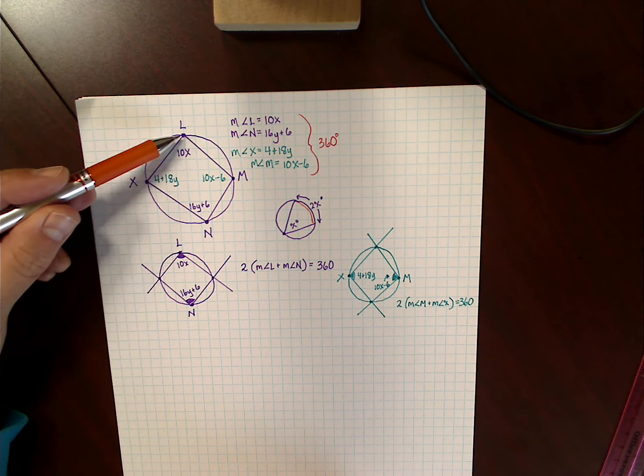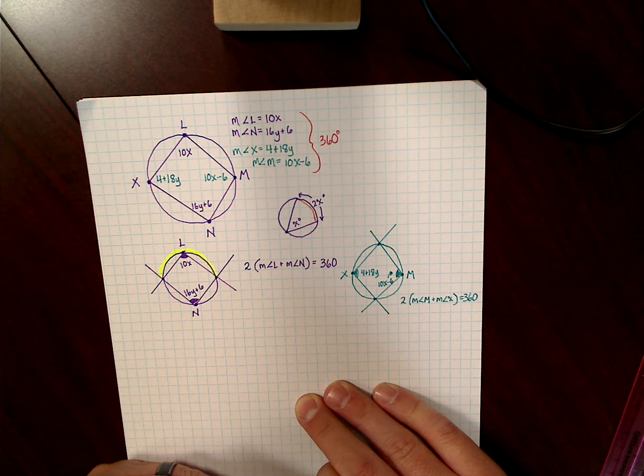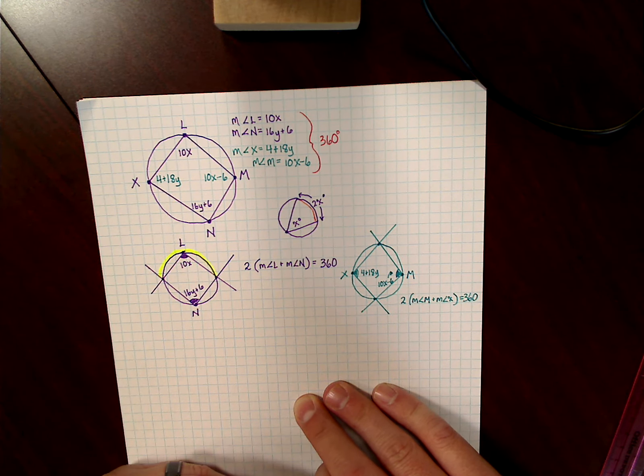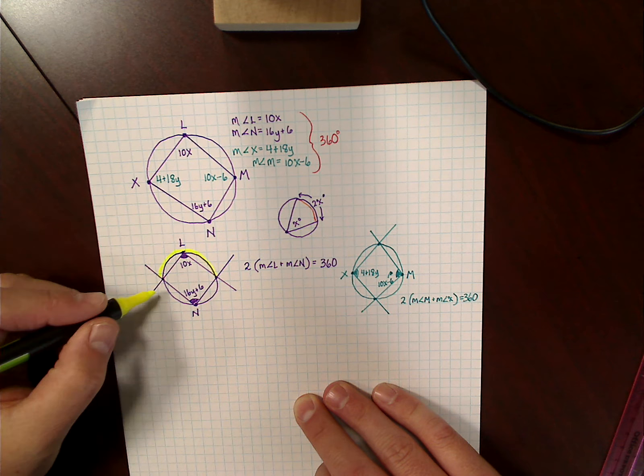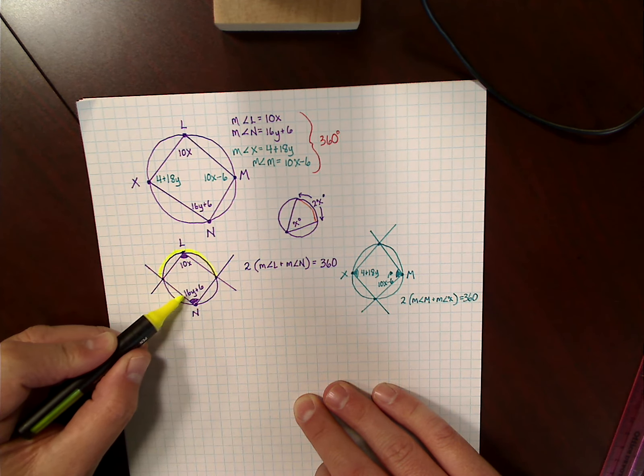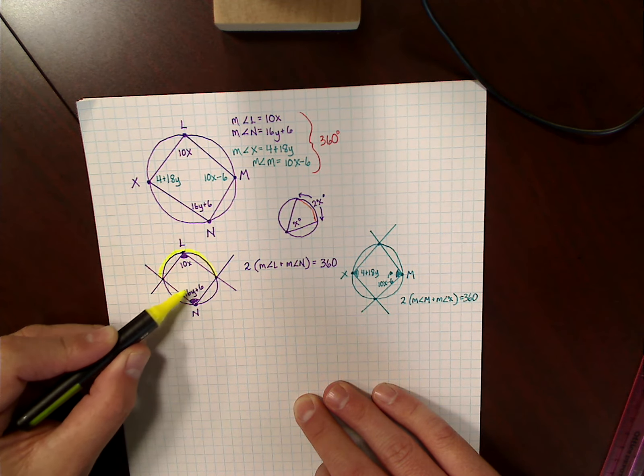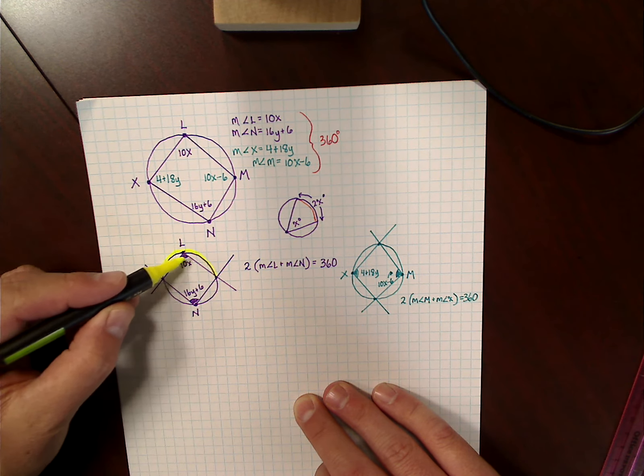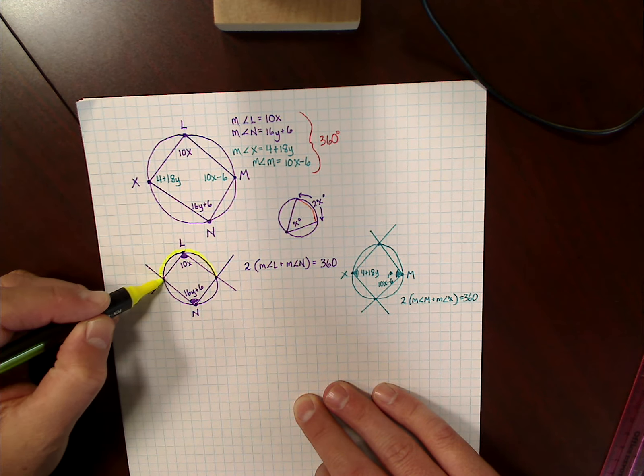If you look at where they exit the circle, you can kind of think of it like this. Angle N exits the circle here, and that contains that portion of the circle, which we don't know. We know it's twice of the measure of whatever the angle is, so two times this amount. And then if you look at angle L, it exits the circle here. So those two angles account for 360 degrees.